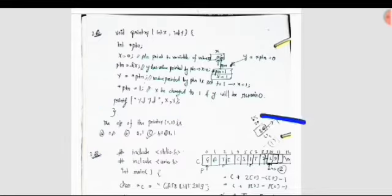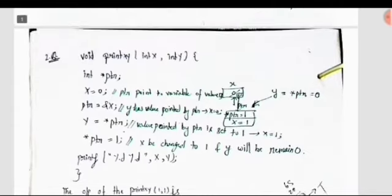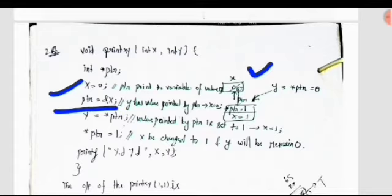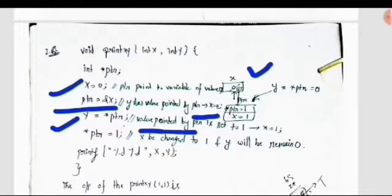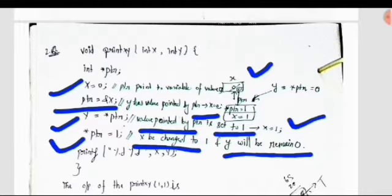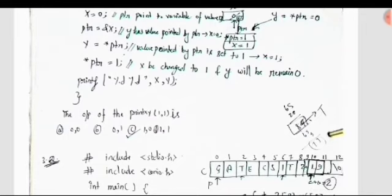Coming to the solution: the pointer ptr points to x, so x equals 0. Now y equals pointer ptr means the value pointed to by ptr is set to 1, so x becomes 1. Then pointer ptr equals 1 means x is changed to 1, and y will remain 0. So the output for this program is option C: 1, 0.